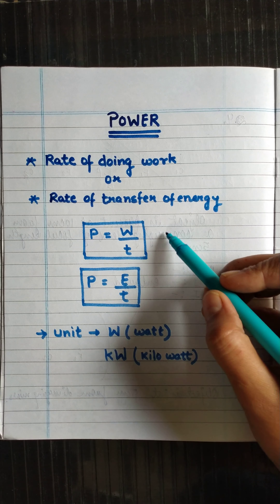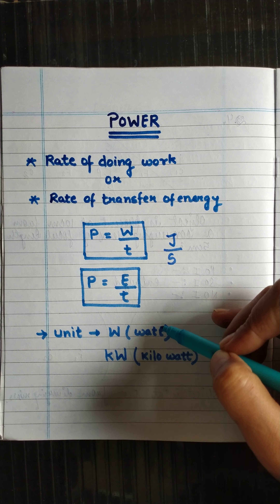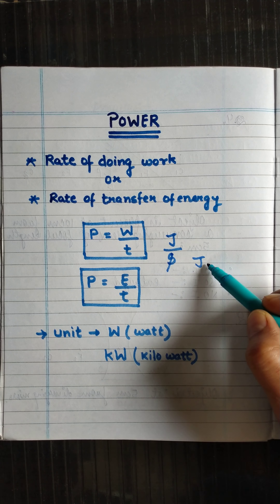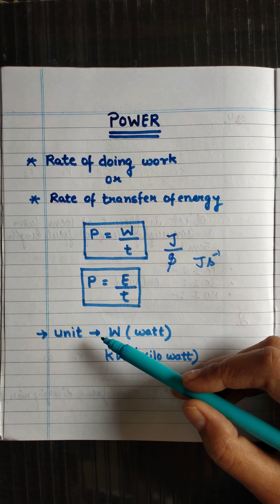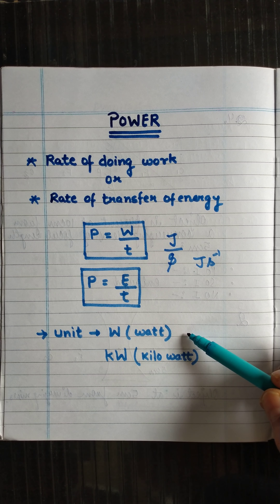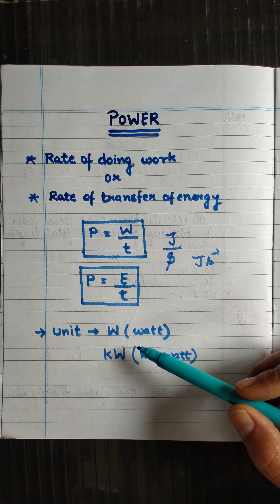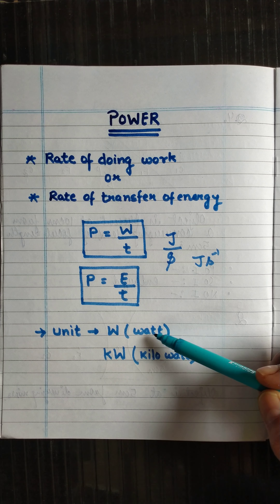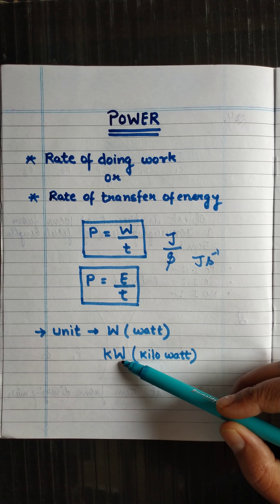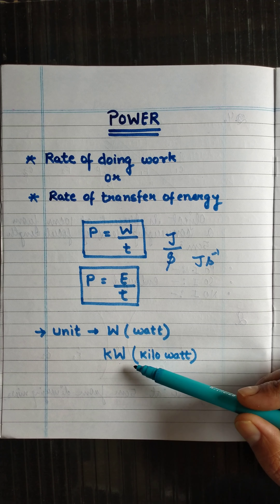Power equals work upon time. Since work is equivalent to energy, power also equals energy upon time. The unit of power — since the unit of work or energy is joule and unit of time is second — is joule per second, or joule second inverse. The SI unit of power is given in honor of the scientist James Watt. The SI unit of power is Watt, with symbol capital W. The larger unit is Kilowatt, abbreviated kW.